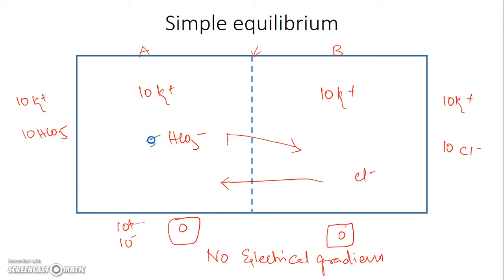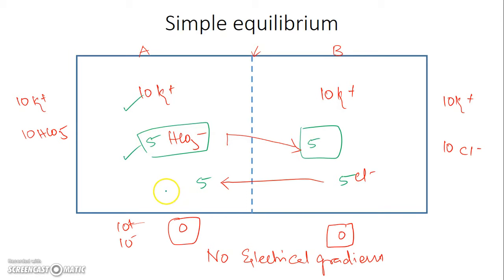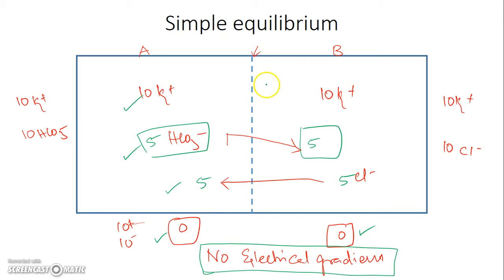After equilibrium: 5 bicarbonate on each side and 5 chloride on each side. Now, on both sides of the membrane there is no concentration gradient — all ions including potassium, bicarbonate, and chloride are equally distributed — and there is no electrical gradient either, as the net charge on each side is zero.